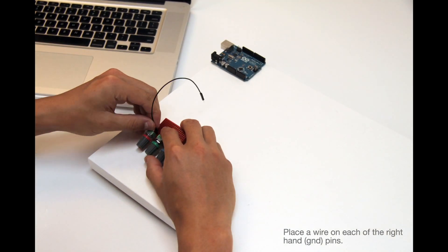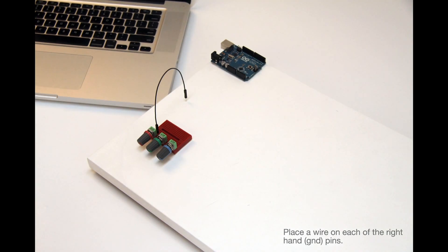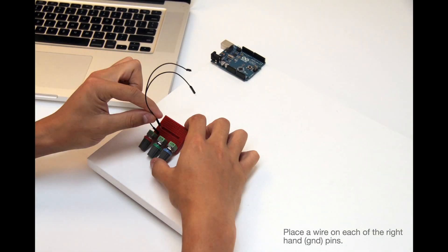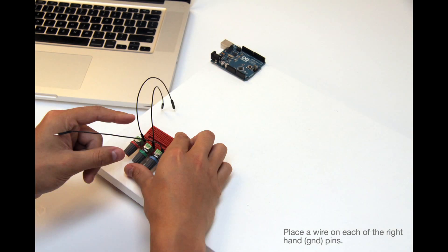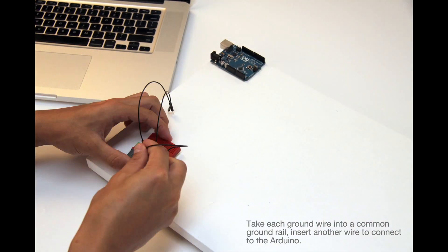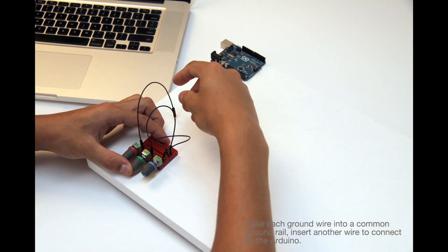Place the ground wire on the right hand pin of each potentiometer. Connect the grounds all to a common rail on the right.